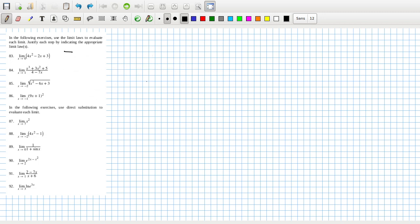So this is the limit as x goes to 0 of x squared, minus 2 times limit as x goes to 0 of x, plus 3, which is 3.